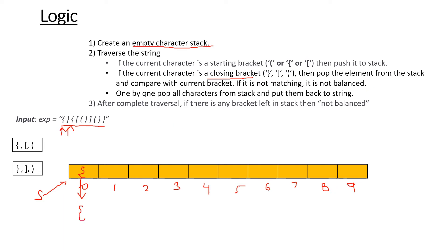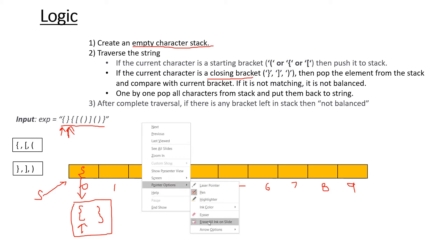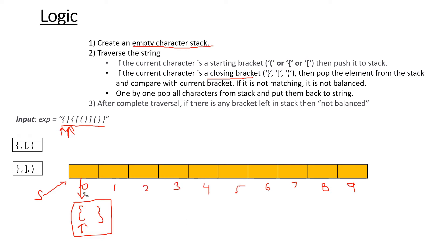We pop this element from the stack and compare it with this character. The corresponding closing bracket for the opening bracket matches, so this is a balanced pair so far. When we pop the element, it gets deleted from the stack. So let's delete it — we have done that operation and we are now at this stage.